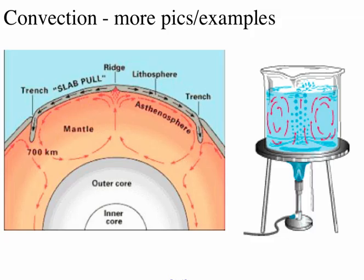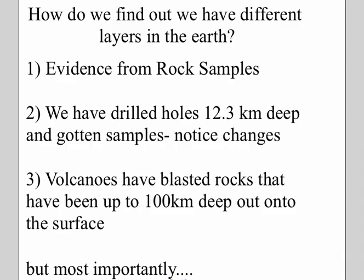Convection — you should know about heat transfer: conduction, convection, radiation. If you don't know how they work, this is going to get confusing, so go and watch that video. So how do we find out that we have different layers in the Earth?